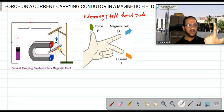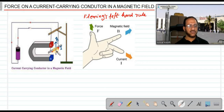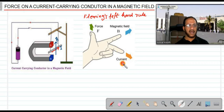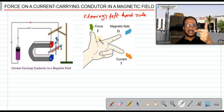Depending on the direction of current as well as the direction of magnetic field, the force direction will change. According to Fleming's Left Hand Rule: stretch the thumb, index finger, and middle finger of your left hand mutually perpendicular. The index finger points in the direction of magnetic field B, the middle finger points in the direction of current I, and the thumb gives the direction of force F acting on the conductor — remember: FBI.